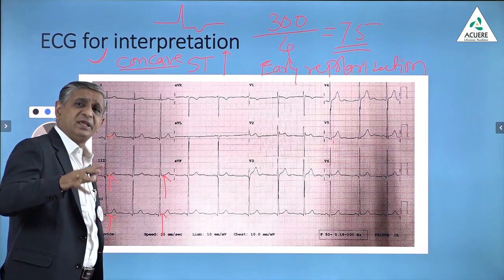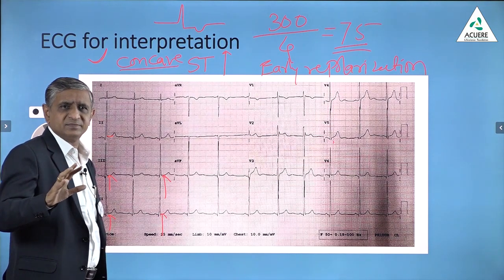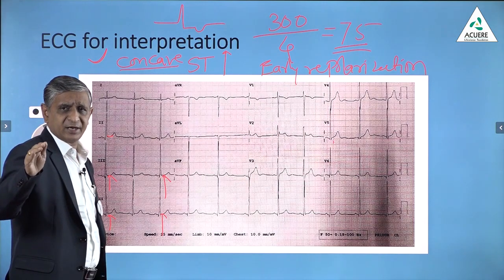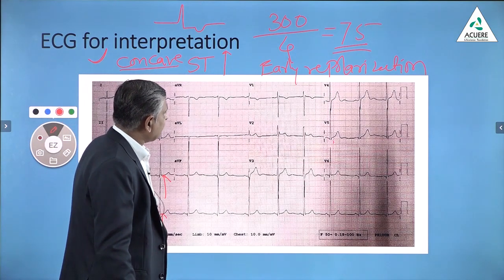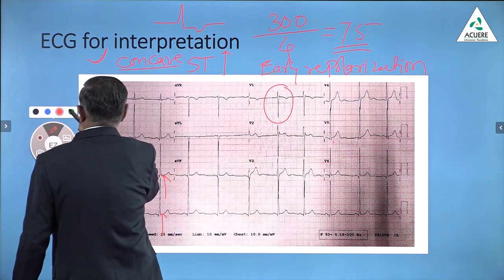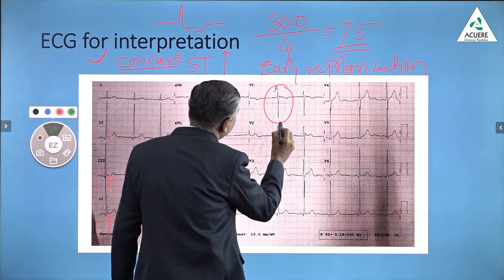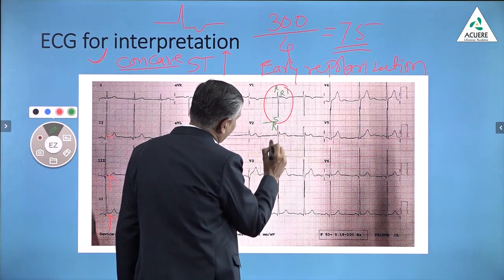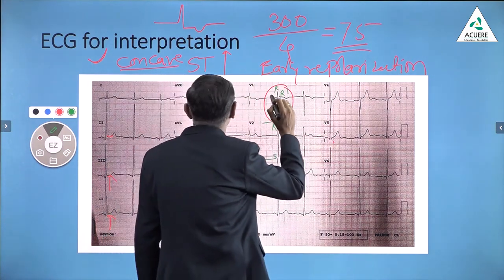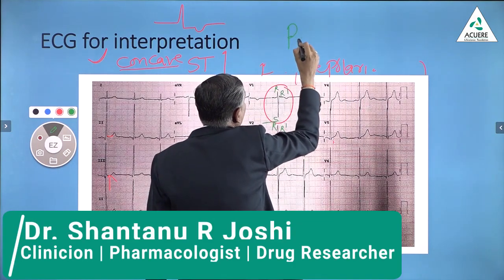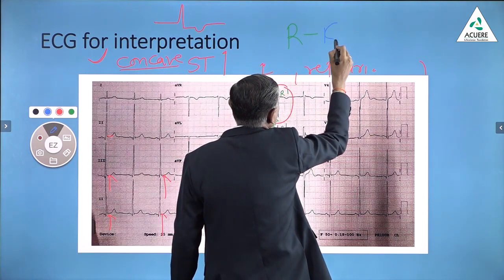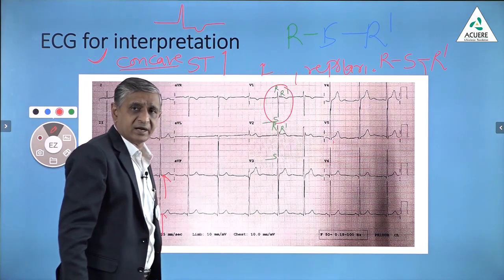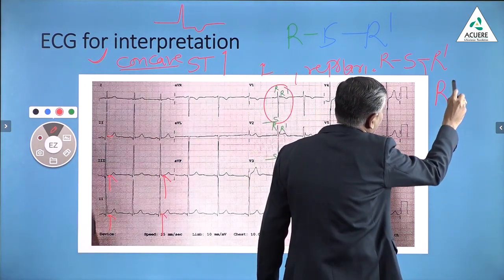You may ask what is the meaning of early repolarization. Many times this change is common in young adult individuals. Now, the next thing I see in the ECG is related to V1. Very easily in V1 you will find R wave, S wave, and R1. The same pattern is found in V2 — R wave, S wave, and R1. In simple terms, this ECG is showing an R-S-R1 pattern, which is related to right bundle branch block.